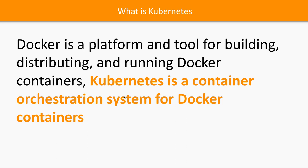Docker is a platform and tool for building, distributing, and running containers — it creates the container runtime and helps us create and run containers. But we are not talking about one or two containers. What if your application has 20 to 30 containers? How are we going to manage and orchestrate them? That is where tools like Kubernetes come in. Kubernetes is a container orchestration system for Docker containers. Orchestration covers everything — managing, scaling up, scaling down, and managing the lifecycle of containers, including recreating containers that go down.